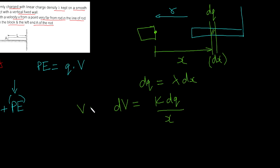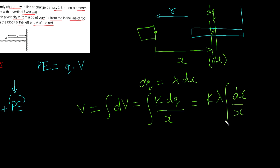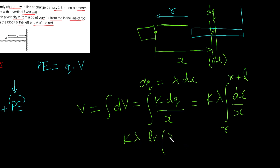To find the total potential V, we need to integrate. Substituting DQ, we get integral of K lambda DX over X, with lower limit R and upper limit R plus L. This is quite simple to solve. The result is V equals K lambda times ln of (R plus L) upon R. This is your potential at a distance R from the left end A of the rod.